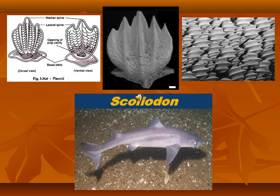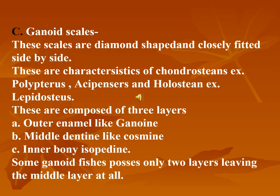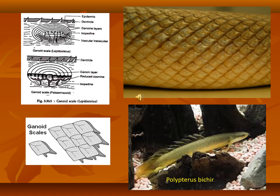The third type of scales are ganoid scales, which are diamond-shaped and fit closely side by side like tiles, forming a bony armor for the fishes. Ganoid scales are composed of three layers: an outer enamel-like ganoin, a middle dentine-like cosmine, and an inner bony isopedine. Fishes like Polypterus and Acipenser are ganoid fishes.